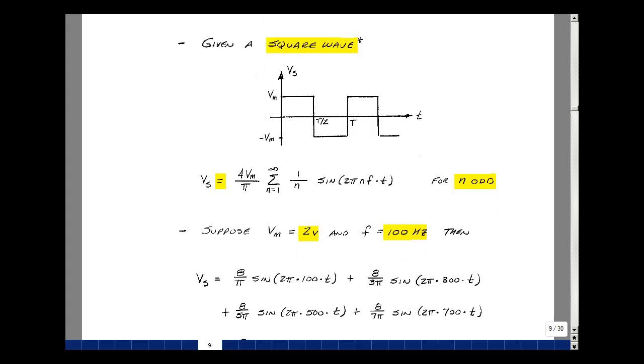Suppose they have a 2 volt square wave at 100 hertz. Well, then evaluating this equation for n equals 1, I'm going to have 4 times 2, which is 8, divided by pi, 1 over 1, and the sine of 2 pi 1 times 100 times t. The next term is when n is equal to 3, so we'll get 8 divided by pi, and then divided by 3, and then the sine of 2 pi 3 times 100 times t, and so on with the 5 and 500 and 7 and 700.